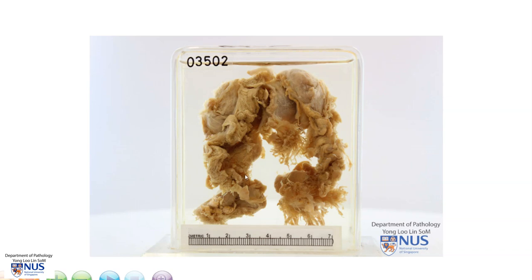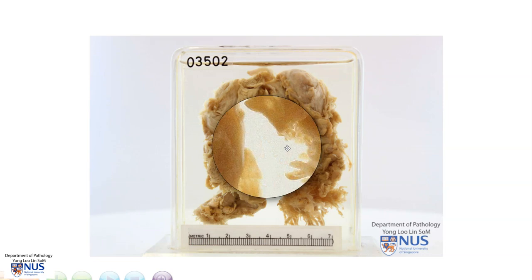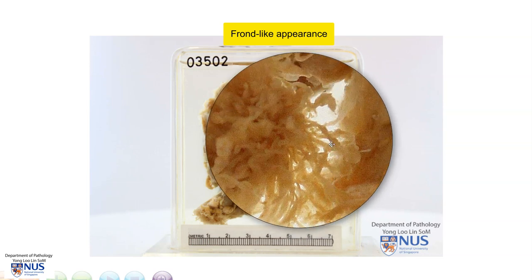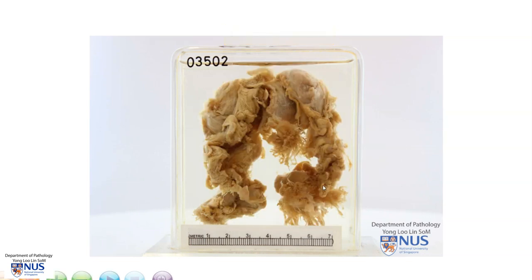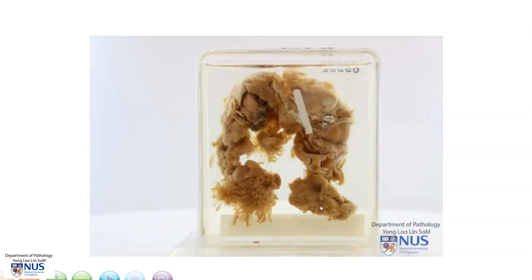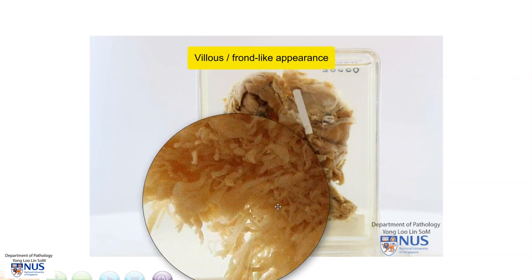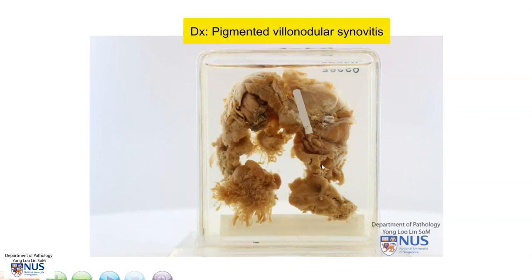This is a gross pathology specimen taken from the synovial tissue in the knee joint. This is a very large piece of synovial tissue with a very interesting appearance. If you look in this area, which I'm going to magnify, we can see that there is almost this frond-like appearance or these finger-like projections, giving it a papillary appearance grossly. We can also see quite obviously this appearance on the opposite surface. So it has a somewhat villous or frond-like appearance, and the diagnosis here is pigmented villonodular synovitis.